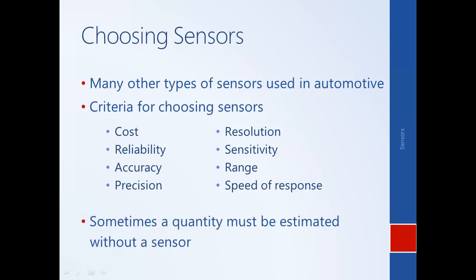There are even instances where a quantity must be estimated without a sensor. Instead of physically measuring some quantity, you use a mathematical model to estimate or predict it. One reason a sensor might not be available is because it's prohibitively expensive. Sometimes a sensor might not even exist — for example, there isn't really a sensor for measuring the state of charge of a battery, so a mathematical model must be used to estimate that quantity. Using an estimator can also improve reliability because it essentially can't break down.